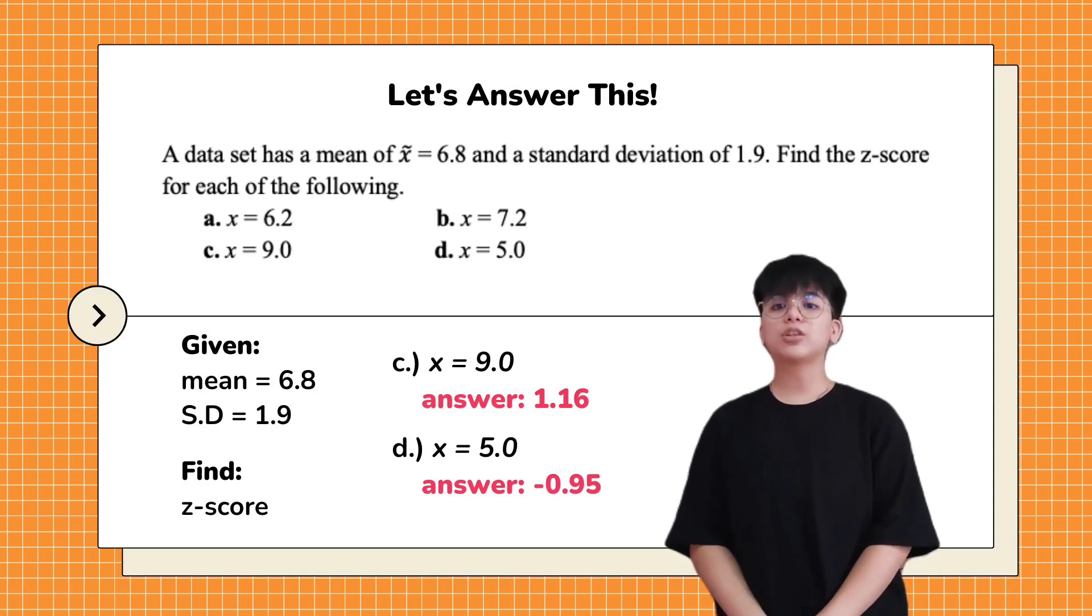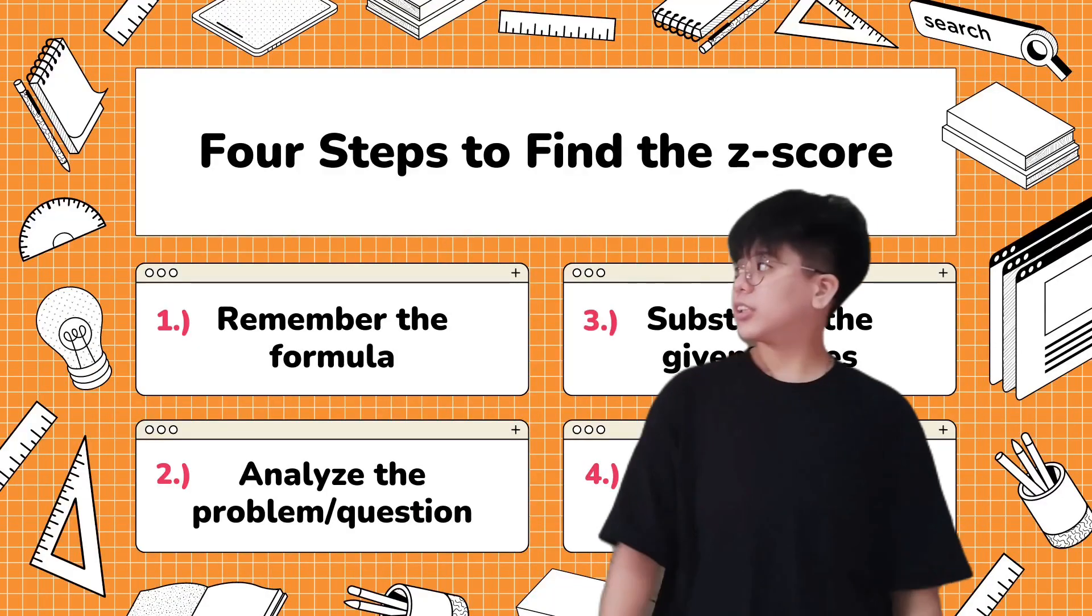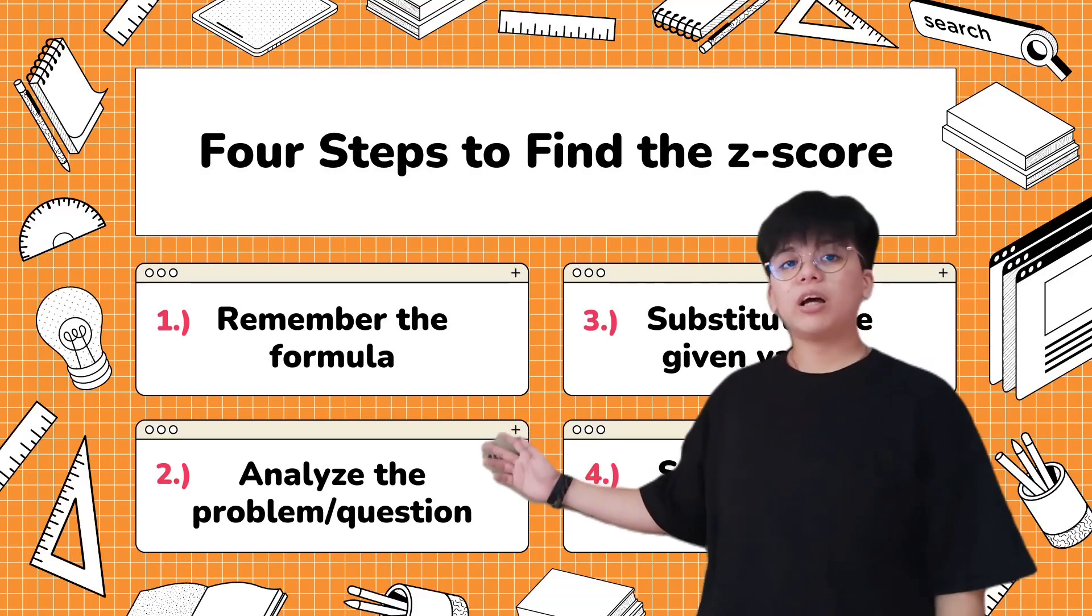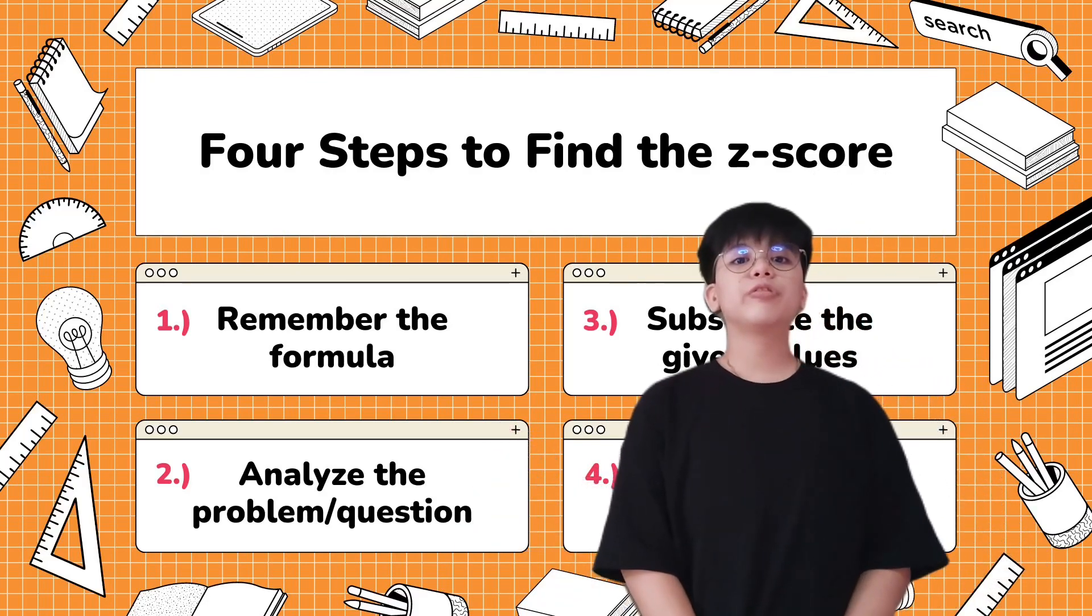I hope you guys learned from our lesson today. But before we end this video, I will give you 4 steps to find the z-score. First is to remember the formula, which is Z equals value minus mean over standard deviation.